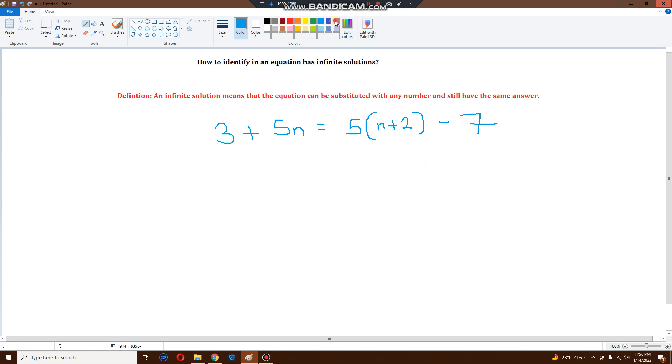So let's use the distributive property. Let's solve this out. 3 plus 5n stays the same. No change. 5 times n is 5n. 5 times 2 is positive 10 minus 7.